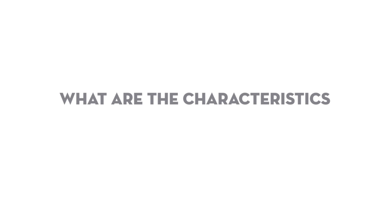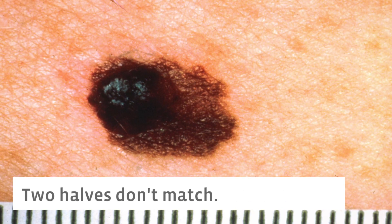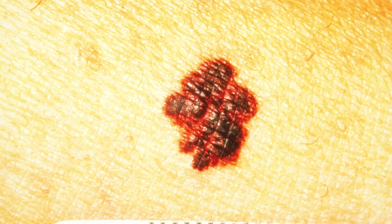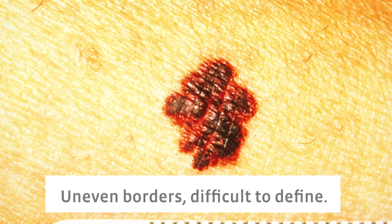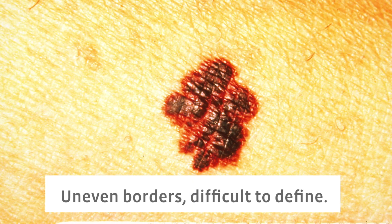Some of the characteristics that we tell patients to look for are the ABCDEs of moles. A is asymmetry — if you draw an invisible line through the middle of a mole, does the right side look like the left side? If it's not symmetric, that's something that should be evaluated. B is border irregularity. If we see nice smooth borders, that's what we want to see, but if we start seeing jagged edges, that should be looked at as well.